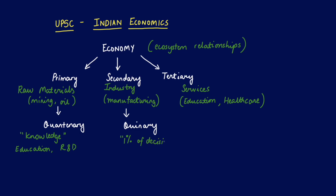One key thing to note is that many economies are a mix of all these sectors — some primary, some secondary, some tertiary. The defining attribute is dominance: if a sector's contribution is more than 50% of the economy, that sector takes dominance. For example, if more than 50% of a country's economy comes from agriculture, it is known as an agrarian economy.